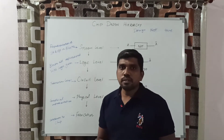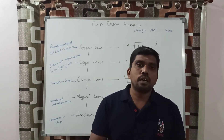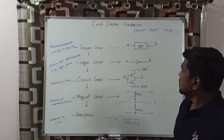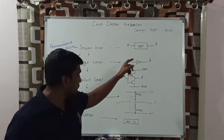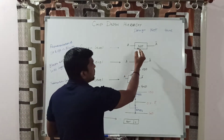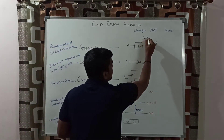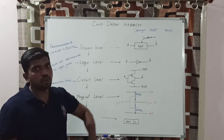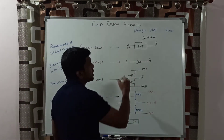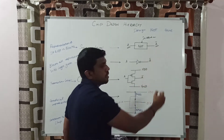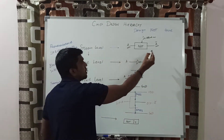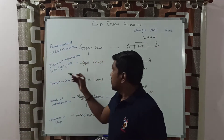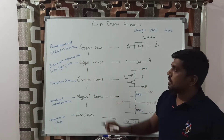In the system level, you represent only the input and output in a block. Let us consider one example — we are developing the inverter circuit. It's a block diagram of an inverter, representing a NOT gate. In this inverter, you assign the input value and output value. Here we take a single input and it produces a single output, called A-bar.